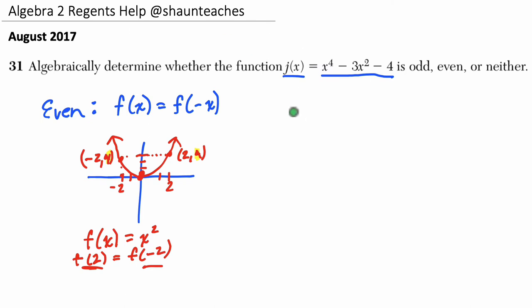For an odd function, let's do odd next. Odd functions, I think of as a cubic function. And basically, the way I think about that is that if I plug in a value or its opposite, they're not the same like an even function. They are opposites of each other. So this tells me the opposite of f of negative x equals f of x.